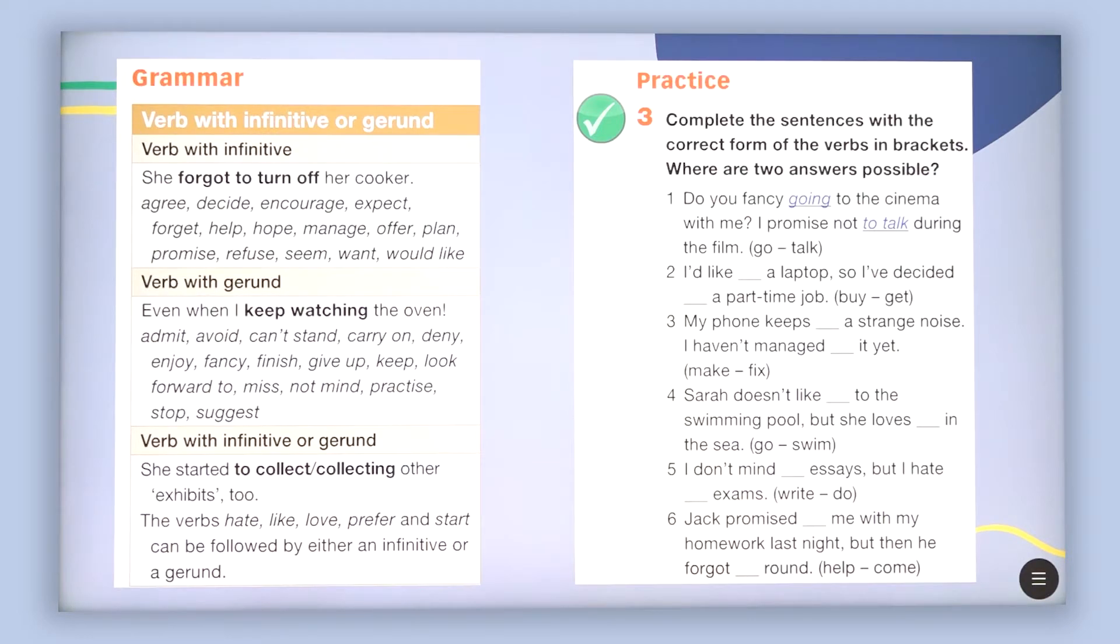Complete the sentences with the correct form of the verbs in brackets. Where are two answers possible? For example, do you fancy going to the cinema with me? I promise not to talk during the film. I'd like to buy a laptop. So I've decided getting a part-time job. My phone keeps making a strange noise. I haven't managed to fix it yet.